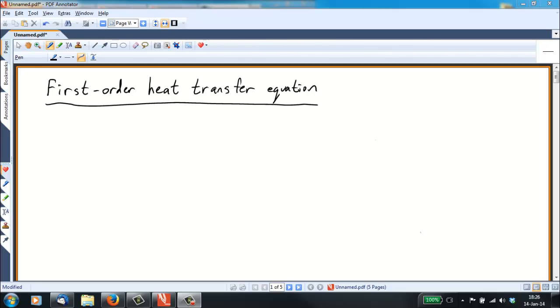In this video we're going to develop a first order heat transfer equation for an enclosed space. An enclosed space might be, for example, your house, or a greenhouse, or a small enclosure that you're using to do tests and experiment in lab.